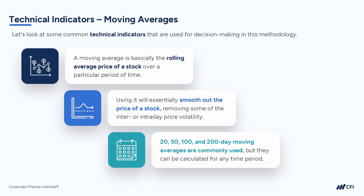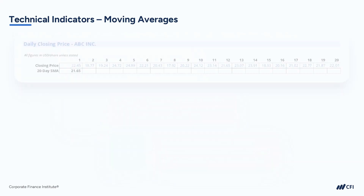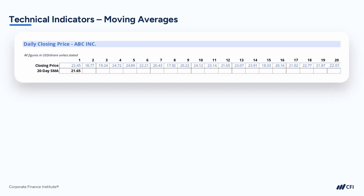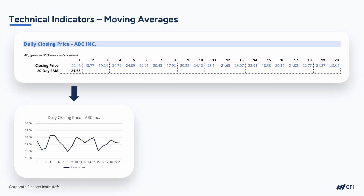Let's take a look at an example. Take a look at the daily closing price of this stock, ABC Inc., for the last 20 trading days. It's quite volatile — some days the price is down into the high teens, and other days the price is up into the low 20s. However, the average price over the last 20 days was $21.65, which gives you a better sense of where the stock is actually priced after removing some of the noise that comes from volatility. This is an example of a simple moving average, or SMA, which is an equally weighted average over the time period.